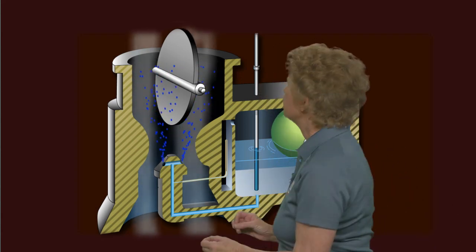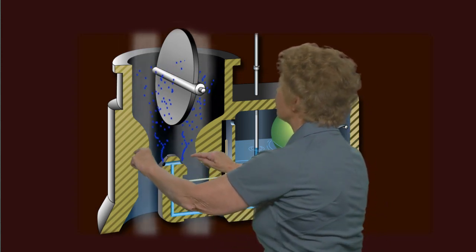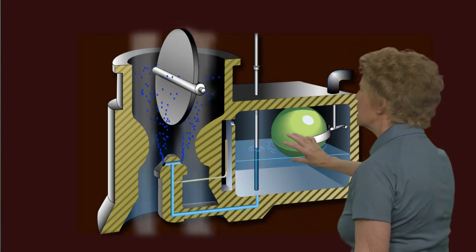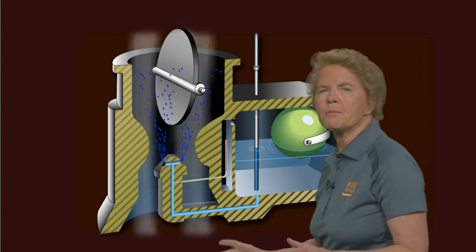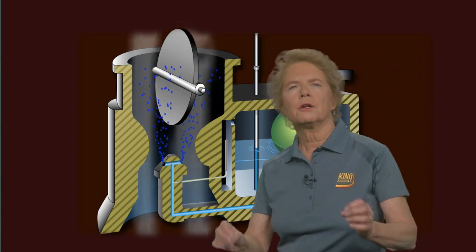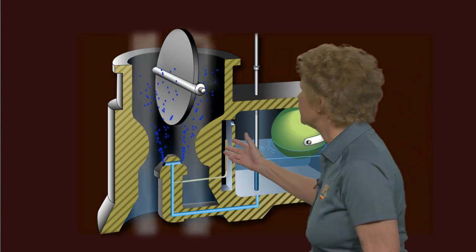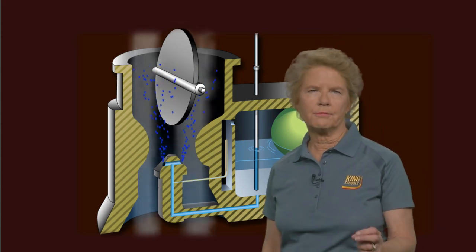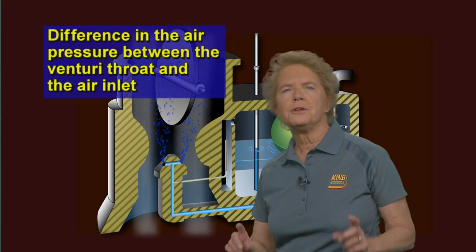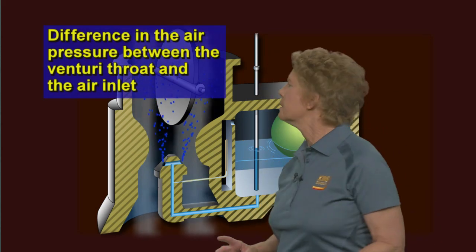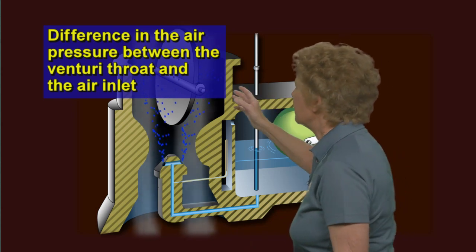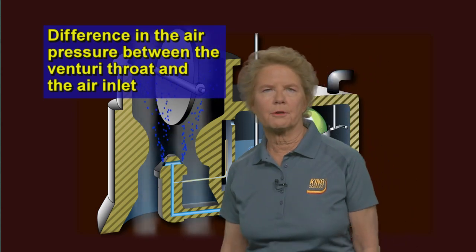As the pressure of the air drops, it pulls the fuel out from the float area in the carburetor. So the operating principle of a float-type carburetor like this is based on an air pressure difference — a difference in the air pressure between the venturi throat and the air inlet on the carburetor.